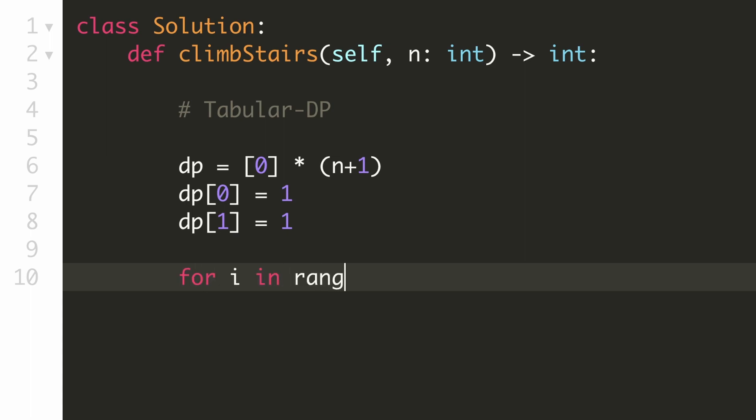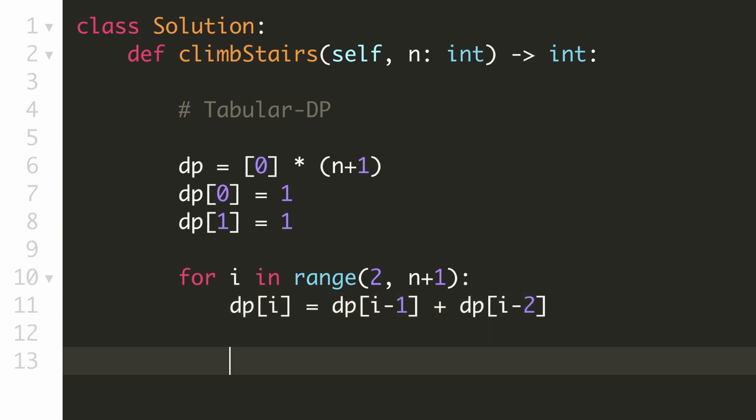Now we'll go through each position starting from 2 till n. Our result for each position will be the sum of the results for the previous two positions. So we'll store that in our DP and once we have computed the result for each position, we can return the result for position n.